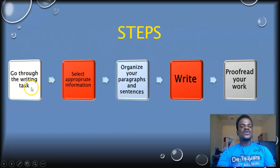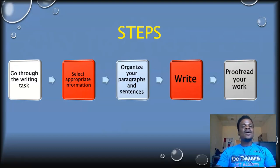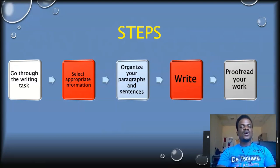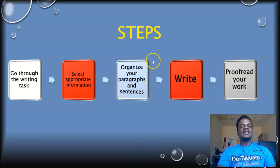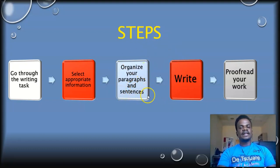After knowing what you are asked to do and the reason why you are writing this letter, the next step is to select appropriate information. Only select information that is important to the reader — there is no need to include all the information in the case notes because you will bore and confuse your reader. After selecting the appropriate information, organise the paragraphs. Each sentence in the paragraph should also be organised according to importance. After organising, then you write.